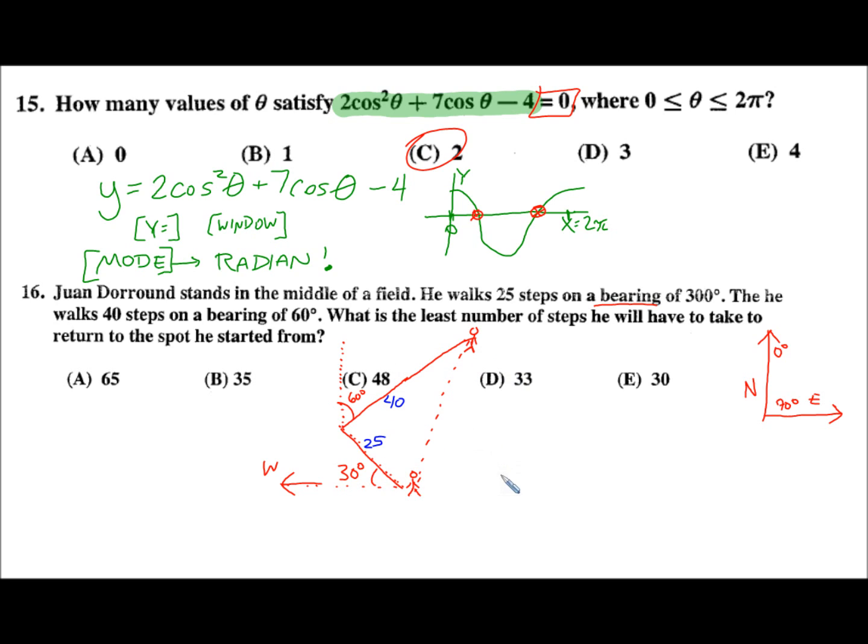Because the shortest distance would be the straight line, and now we have some triangles that have been created. Let's redraw this whole triangle. 25, 40, and this is our unknown, this is what we're looking for. I'll call that x. We need to get some angle degrees here, some measurements. Let's think. We need to establish this is 30 degrees. So this makes a triangle here.